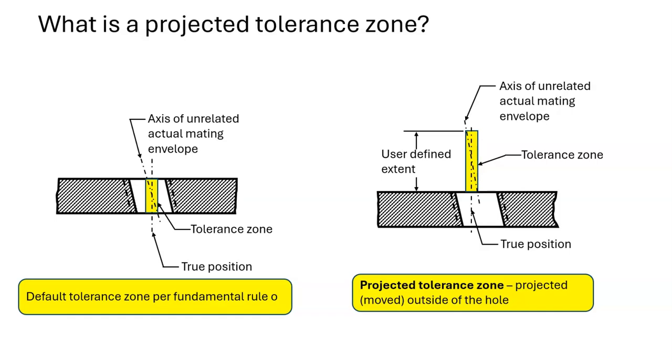A projected tolerance zone is a tolerance zone that is projected outside the part. When the tolerance zone is projected outside the part, it exists only outside the part. None of it is inside of the part.